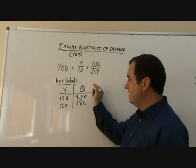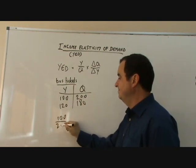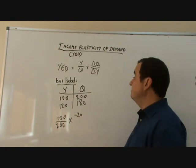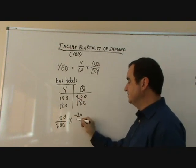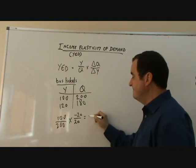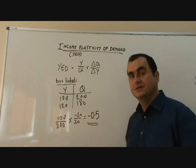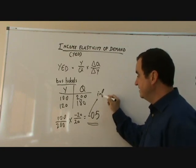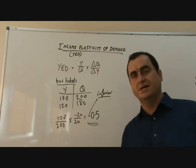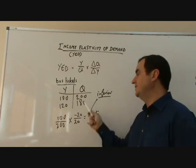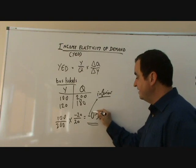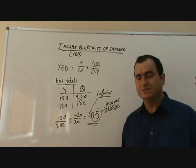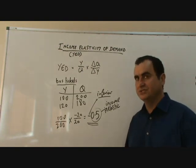So, what does this do to YED? Y over Q is 100 over 200, times the change in Q — now this is minus 20, very important to put the minus in — minus 20 over the change in Y, which has risen by 20. That calculates to minus 0.5. Again, we look at sign and size. The sign tells us it's an inferior good — demand changes in the opposite direction to income. My income rose and my demand fell. The 0.5 tells us it's income inelastic — not very responsive. A 1% change in income would cause a half a percent change in demand for this good.